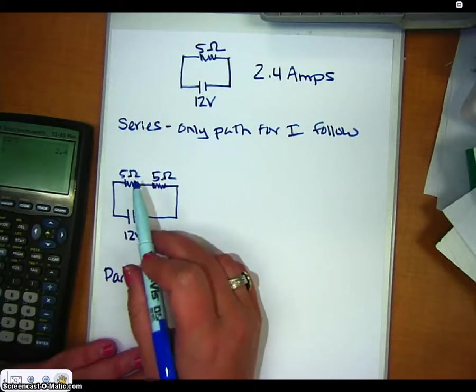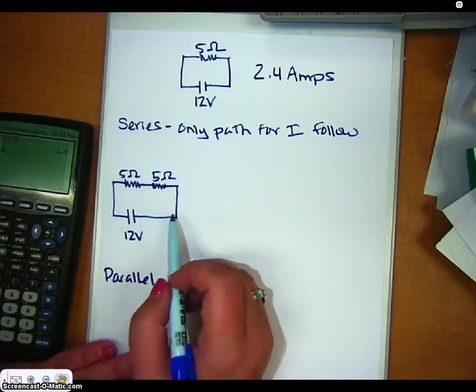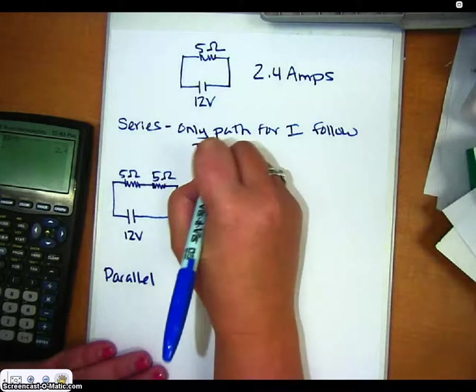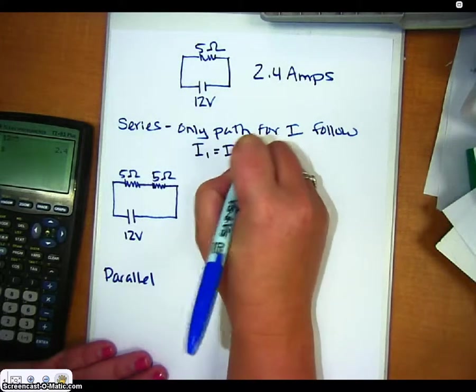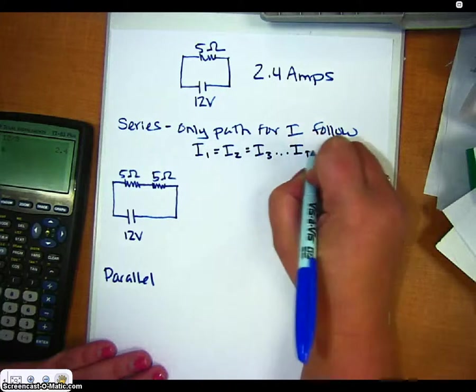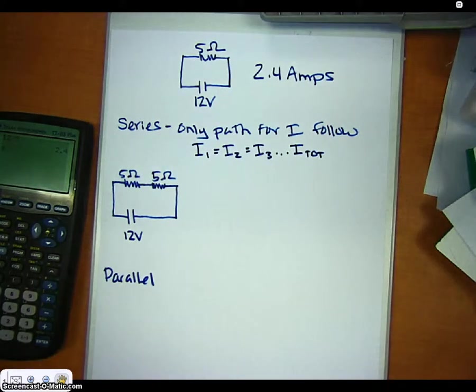So that means the current at any location, if I were to plug up an ammeter, which is a device that measures current anywhere in here, it would have the exact same current. So the current at any position is equal to the total current. So how do we find the total current?